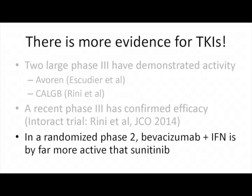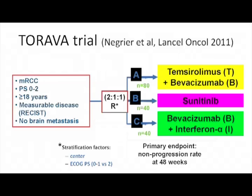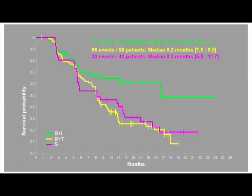How could we think that bevacizumab is better than sunitinib? In the only randomized study where we compared the two drugs, bevacizumab was better than sunitinib. This was a randomized phase 2 — the TORAVA trial conducted in France — where the goal was to evaluate temsirolimus plus bevacizumab, with two control arms: sunitinib and bevacizumab plus interferon. Bevacizumab plus interferon showed 16.8 months PFS while sunitinib showed 8.2 months. It doesn't mean bevacizumab is universally better, but in this study it clearly was.